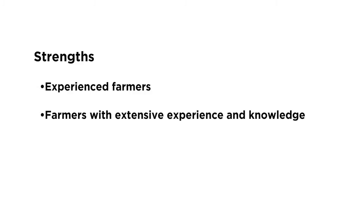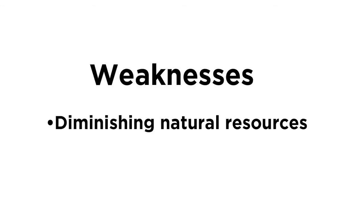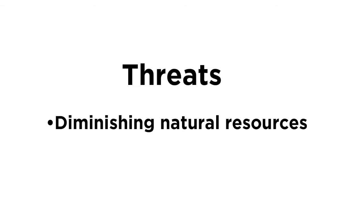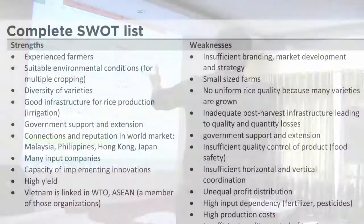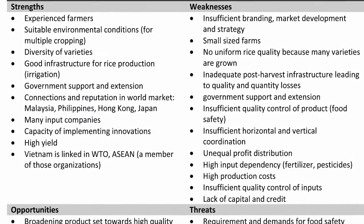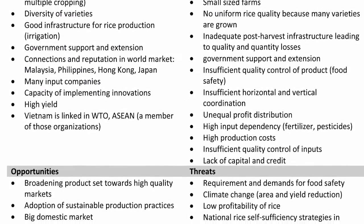After the discussions are concluded, the lists are gathered from the groups and filtered for repeating or overlapping answers. Strengths, weaknesses, opportunities, and threats that are misclassified are placed in the appropriate sections by the researchers. A long list of all the SWOT items identified by the participants is then completed.